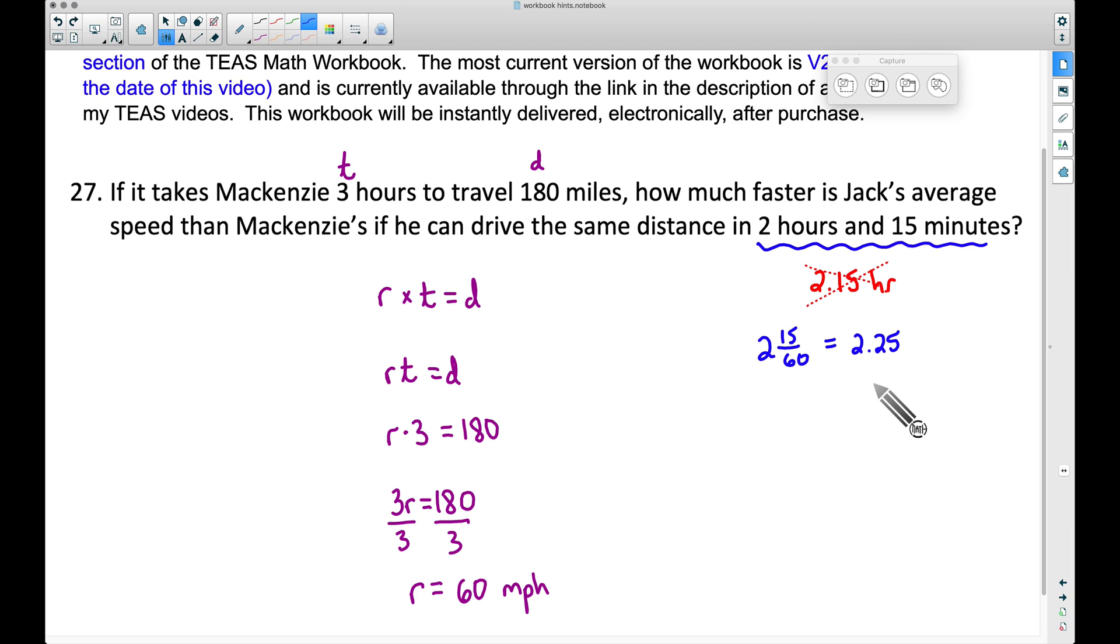You ever heard that before? If somebody said it's quarter after four, that really means 4:15. But anyway, do not do 2.15 for two hours and 15 minutes. Two hours and 15 minutes, 15 sixtieths of an hour, we have 2.25 hours.